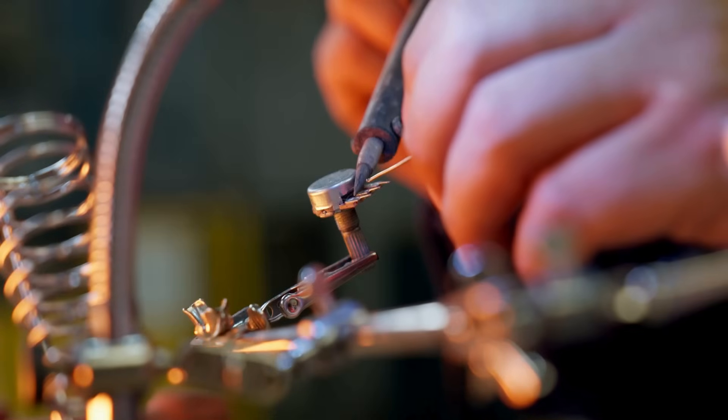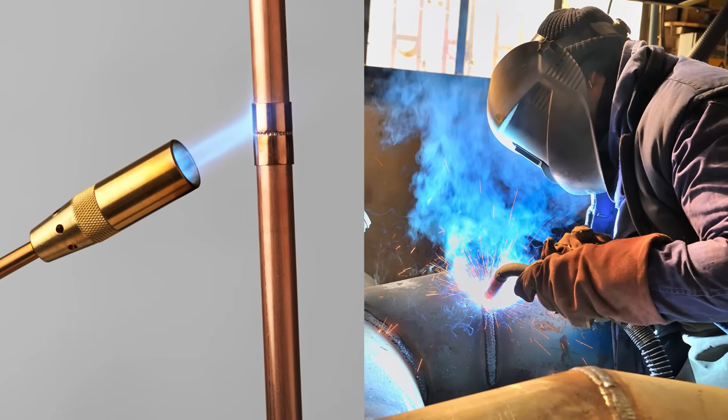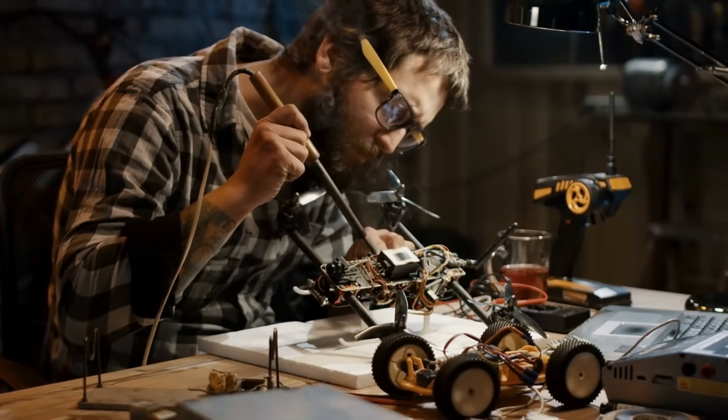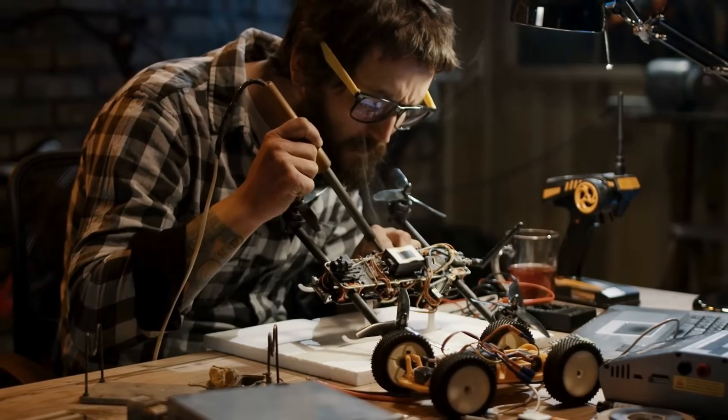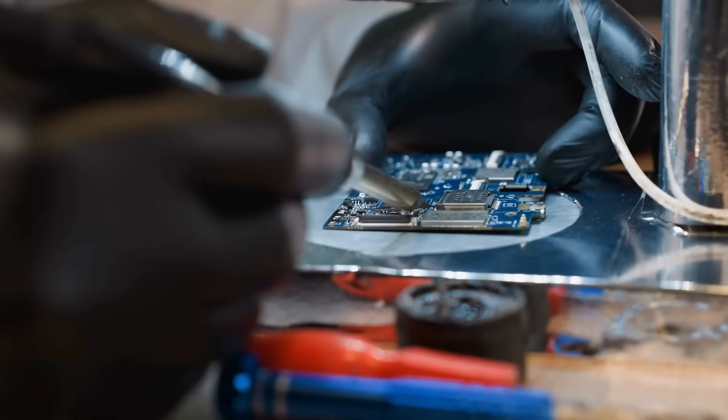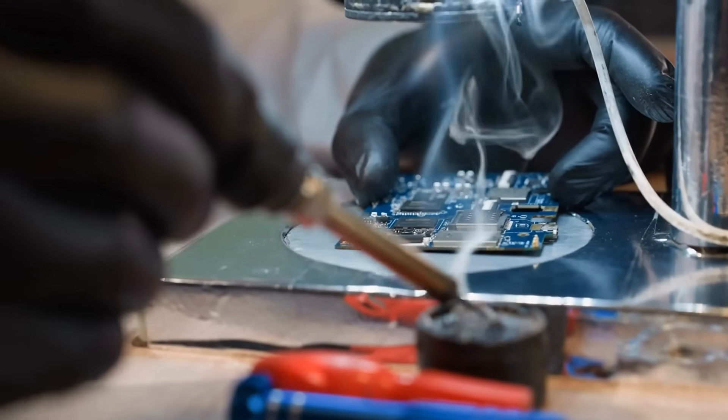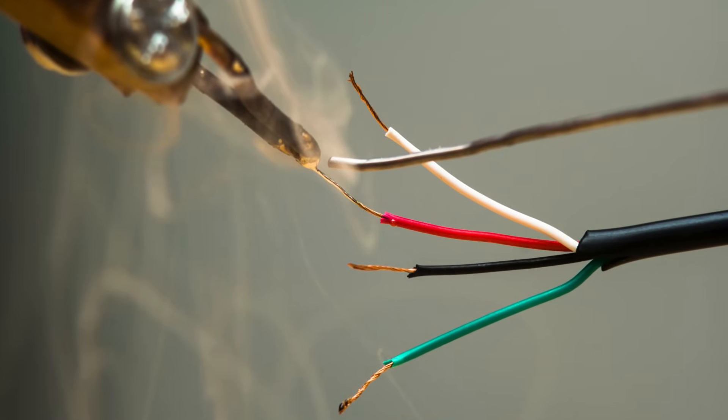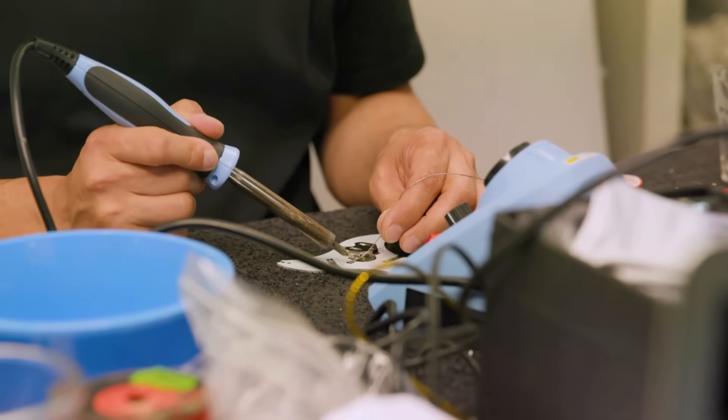What makes the soldering iron unique is how precisely it applies heat. Unlike a blowtorch or a welding machine, the soldering iron doesn't blast intense heat everywhere. Instead, it delivers a controlled temperature to a very specific point, allowing delicate parts to be joined without damaging the surrounding area. This precision is exactly why soldering irons are so crucial in electronics. Tiny circuit boards, microchips, and wires could easily be destroyed by uncontrolled heat, so the soldering iron offers both accuracy and safety.